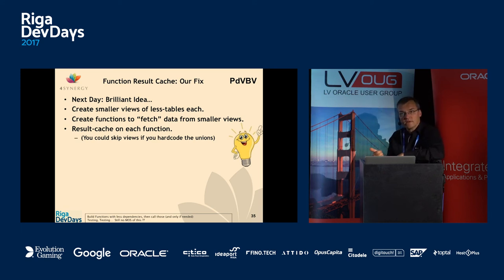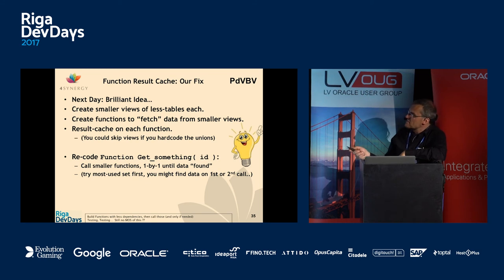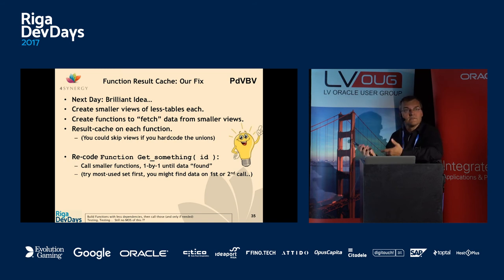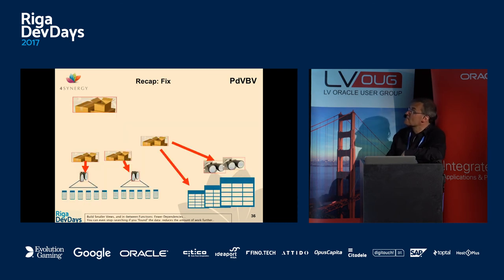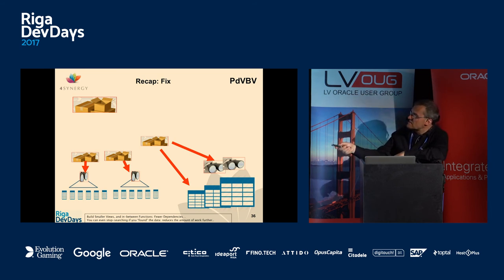We split the function into smaller functions with fewer dependencies — each with less than N dependencies — so each of those functions can use the result cache. We query smaller parts, and once we find the result we return it and don't have to query the remaining tables anymore. The main function stays the same; underneath are three or four different sub-functions. We try the most likely one first, and if we find it quickly we're done.